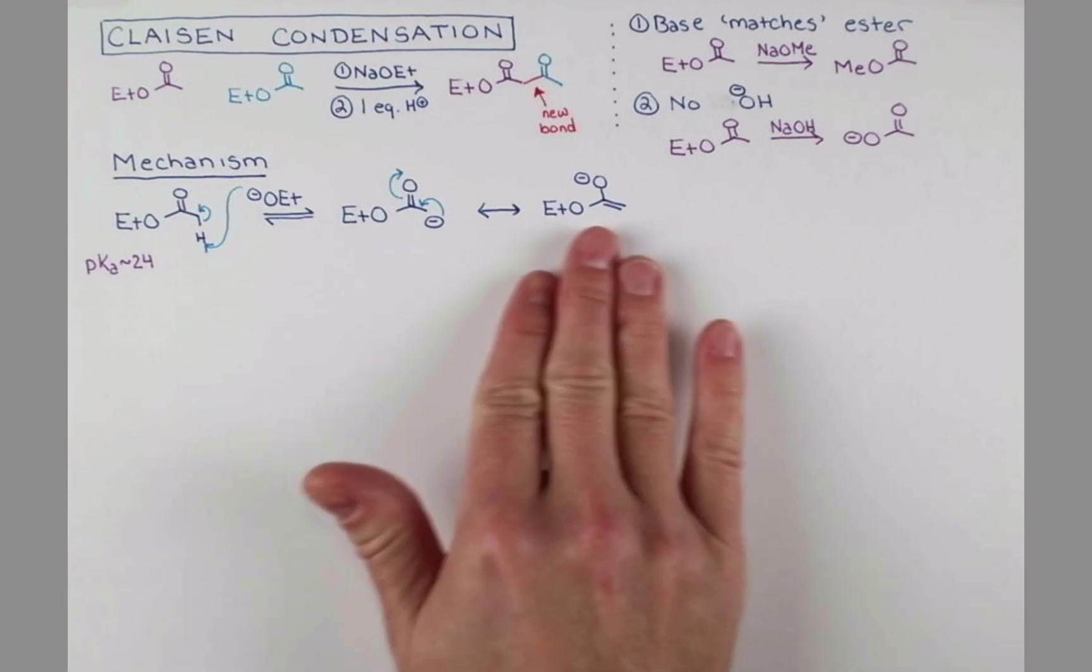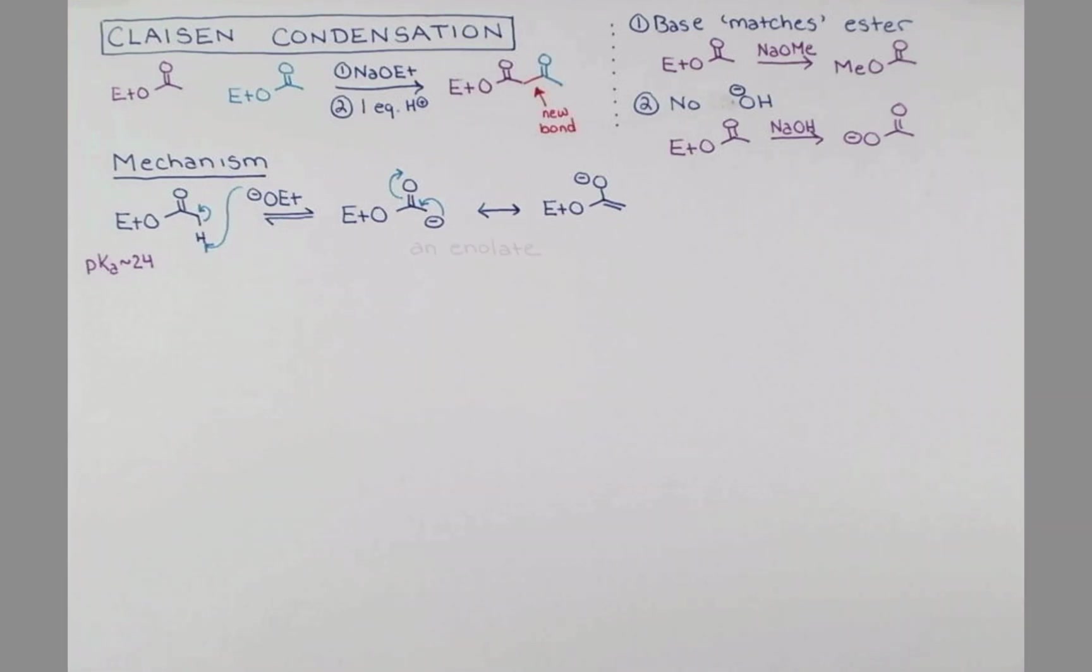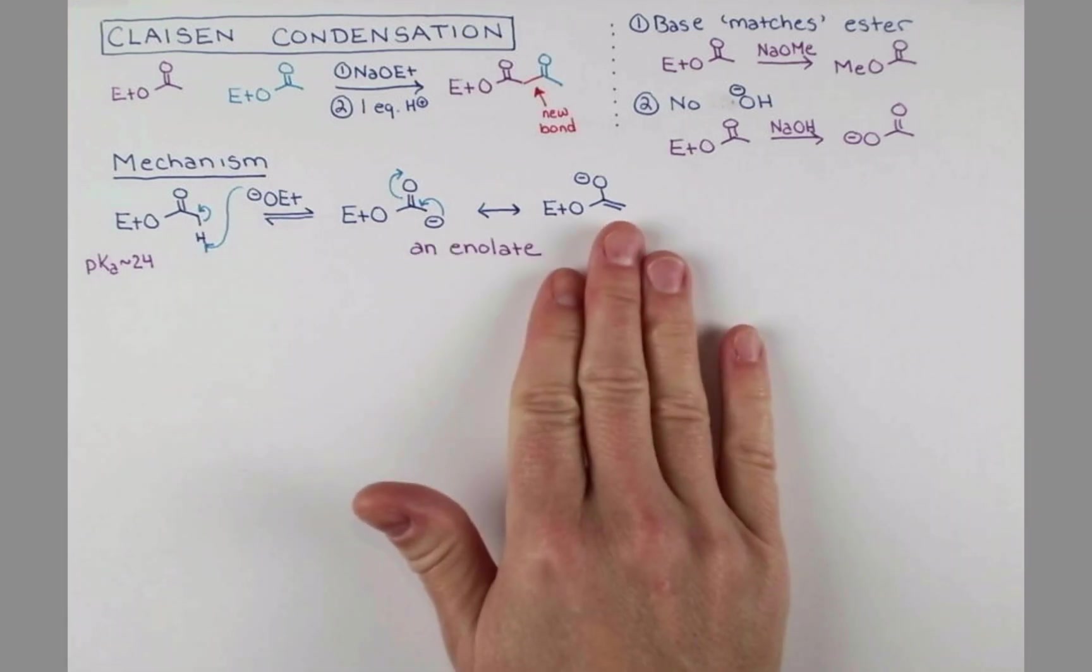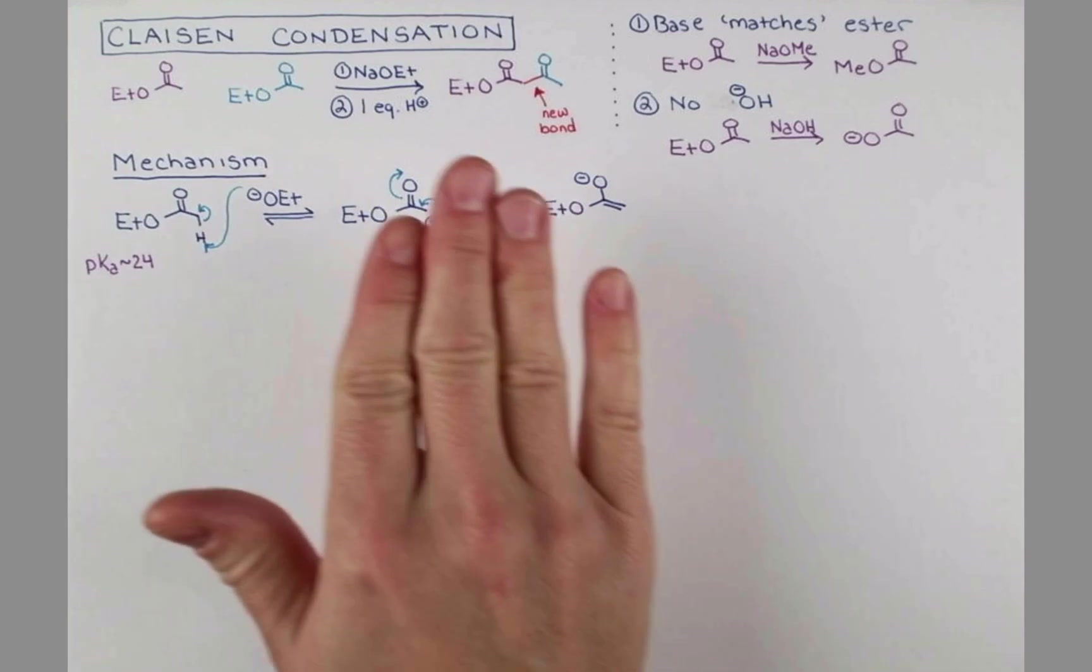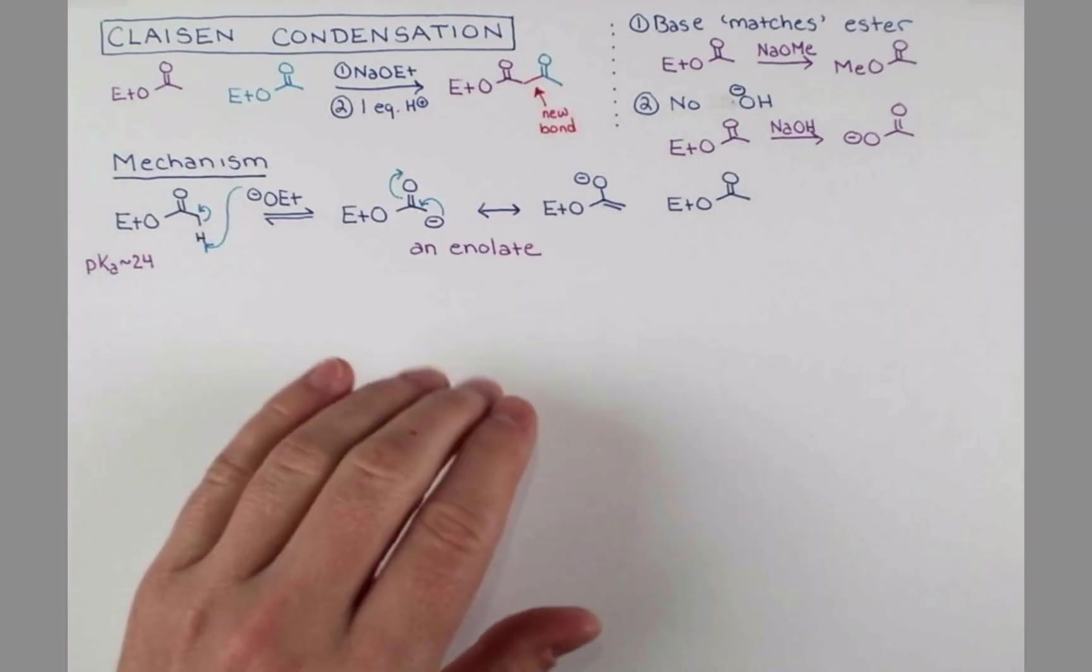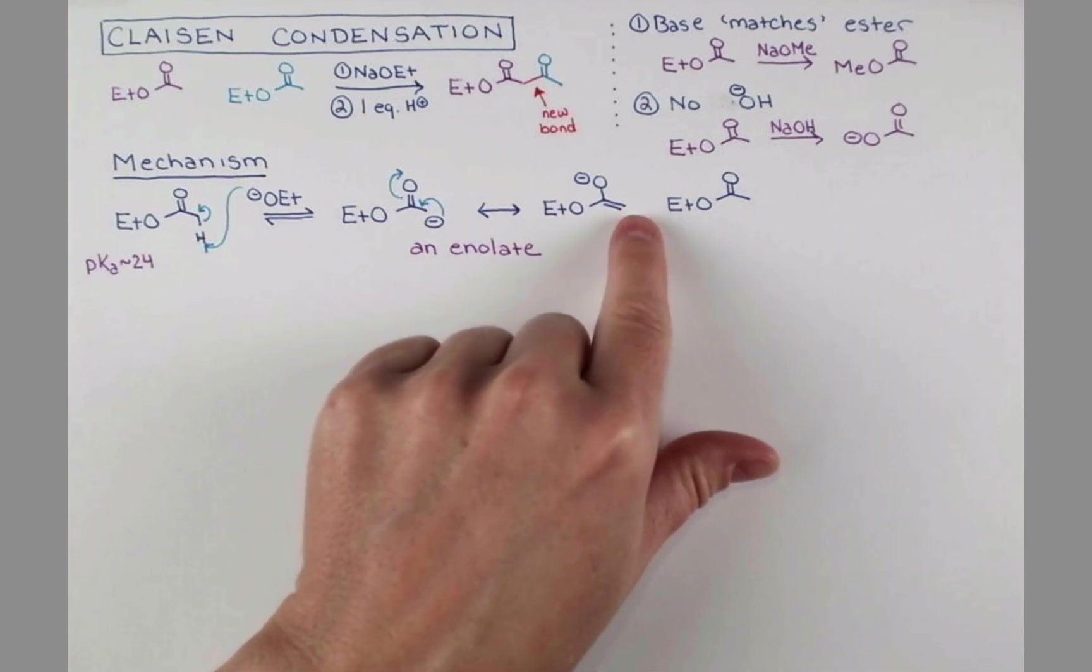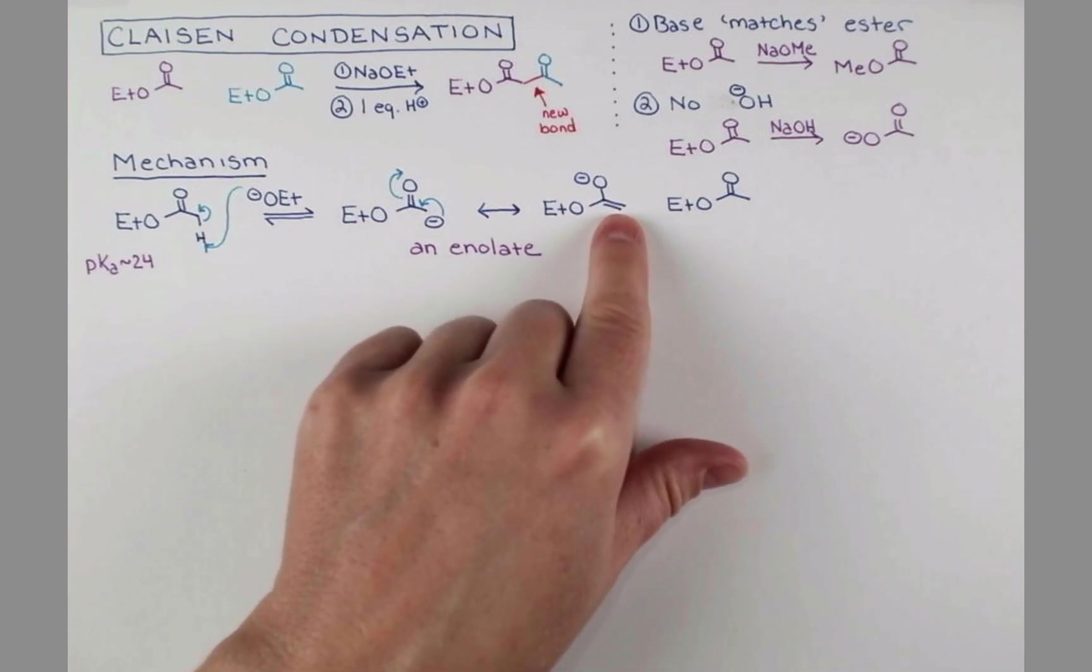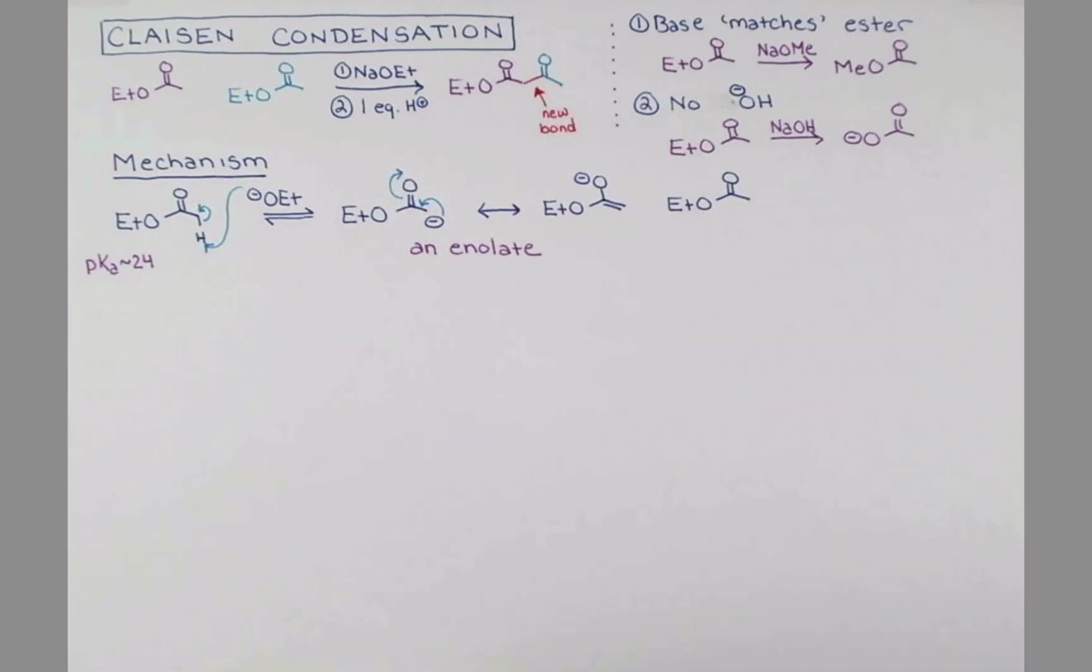Now our enolate reacts with another molecule of our starting material. Notice where the new bond forms. So this enolate needs to attack using this carbon atom and it attacks at the carbonyl carbon to make the bond. We can represent this as the electrons pushing down from oxygen, kicking out this bond here, which attacks at the carbonyl carbon.